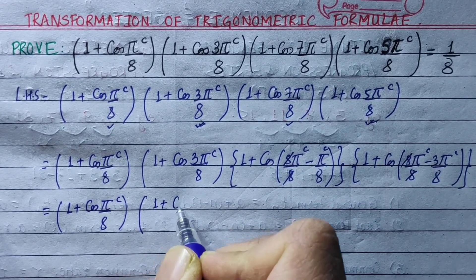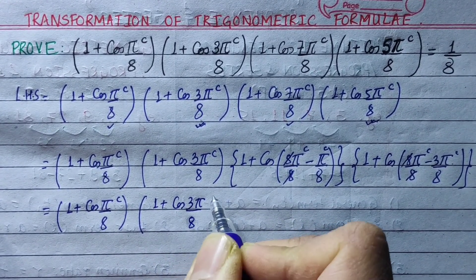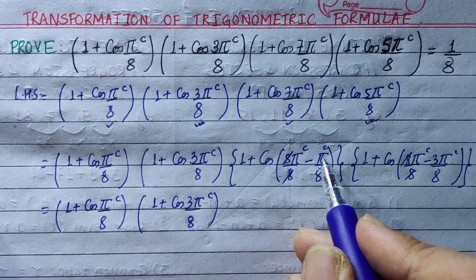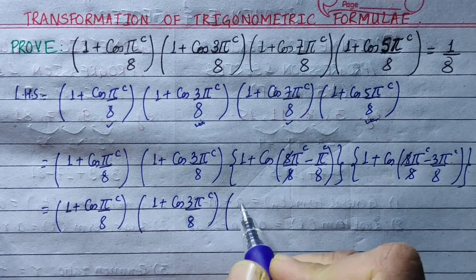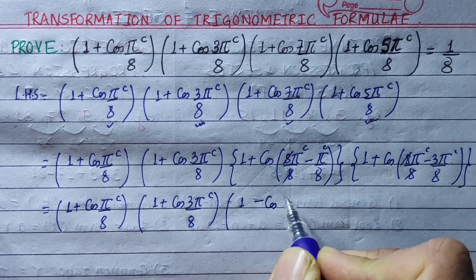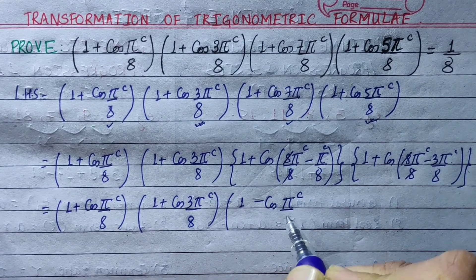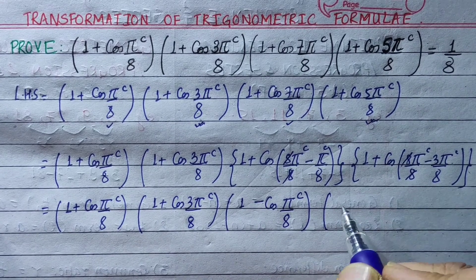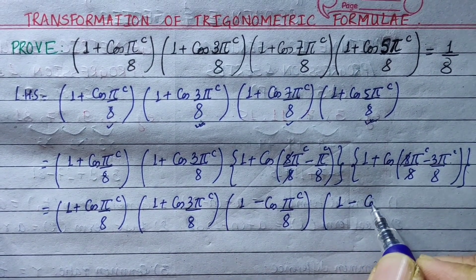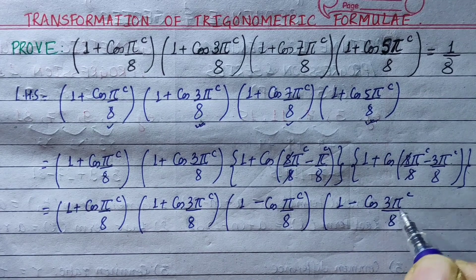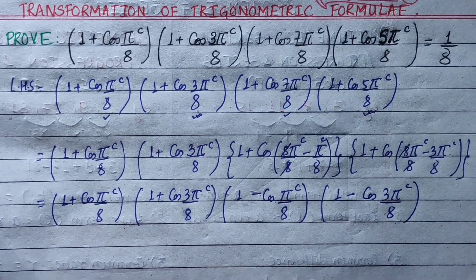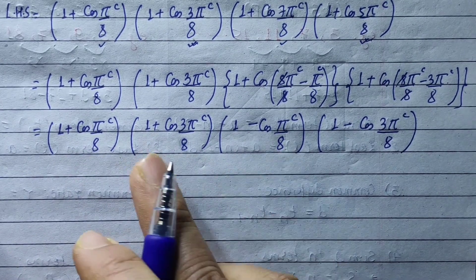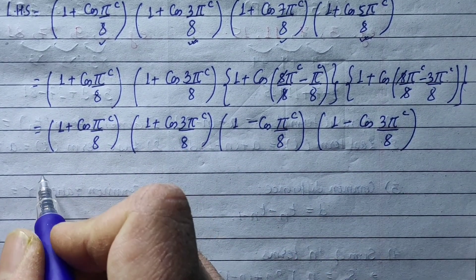So we rewrite: (1 + cos(π/8)) × (1 + cos(3π/8)) × (1 - cos(π/8)) × (1 - cos(3π/8)). This gives us the (a + b)(a - b) pattern, so we apply the formula a² - b².